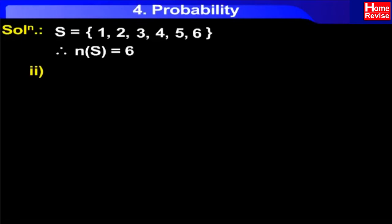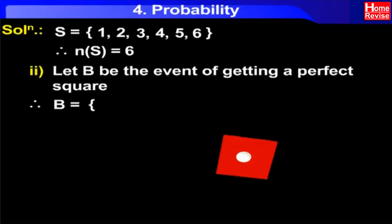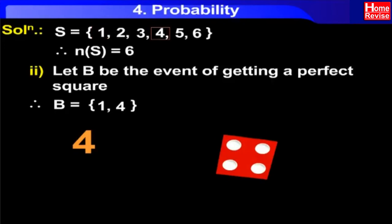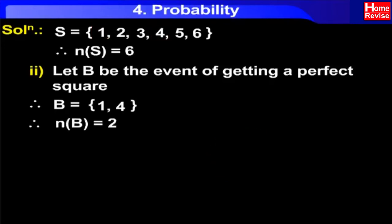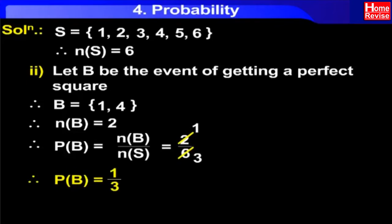Number two: let B be the event of getting a perfect square. Therefore, B = {1, 4}. Therefore, N(B) = 2. Therefore, P(B) = N(B) / N(S) = 2/6 = 1/3.